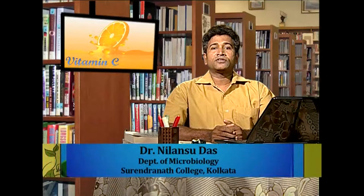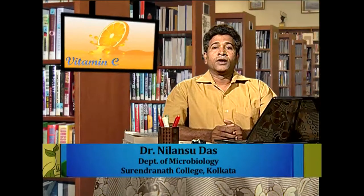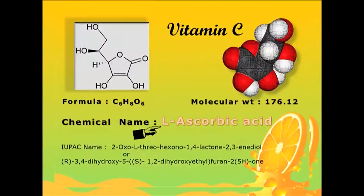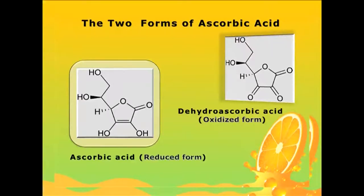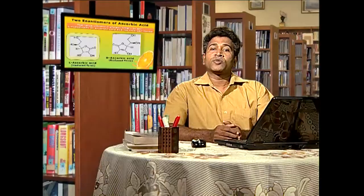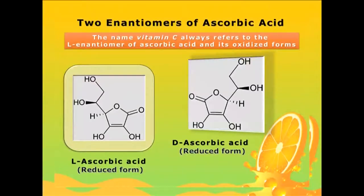Welcome viewers. The topic of today's discussion is vitamin C. Vitamin C is a water-soluble vitamin. Its chemical name is ascorbic acid, its chemical formula is C6H8O6, and its molecular weight is 176. Ascorbic acid is the reduced form, while dehydroascorbic acid is the oxidized form. However, by vitamin C we always mean the reduced form, that is the ascorbic acid.